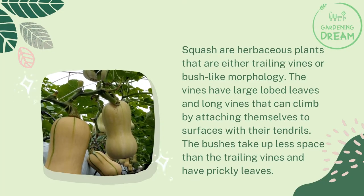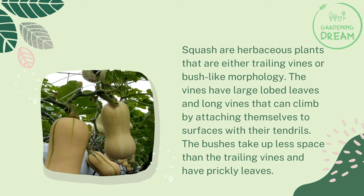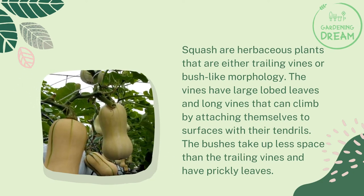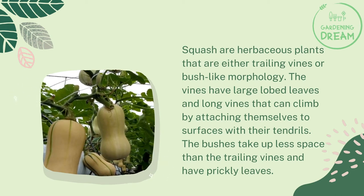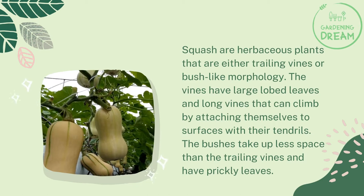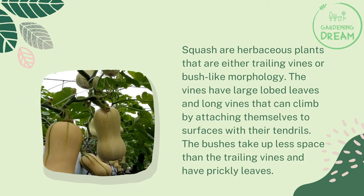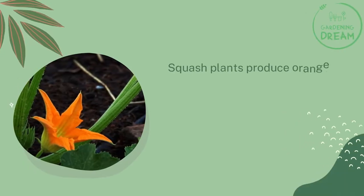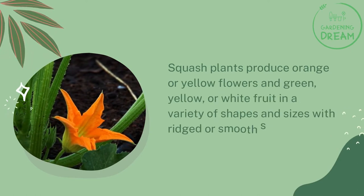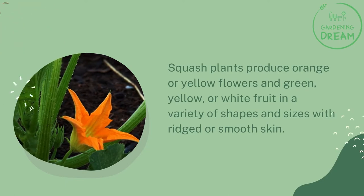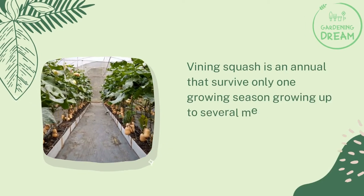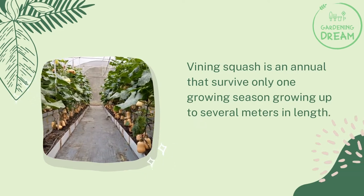Squash are herbaceous plants that are either trailing vines or bush-like morphology. The vines have large lobed leaves and long vines that can climb by attaching themselves to surfaces with their tendrils. The bushes take up less space than the trailing vines and have prickly leaves. Squash plants produce orange or yellow flowers and green, yellow, or white fruit in a variety of shapes and sizes with ridged or smooth skin. Vining squash is an annual that survives only one growing season, growing up to several meters in length.